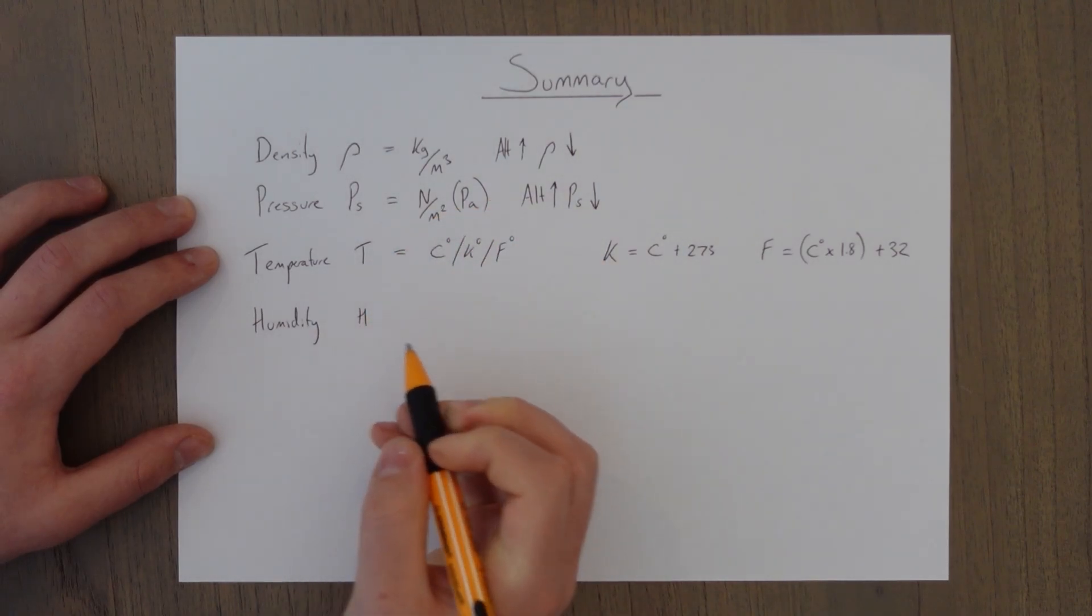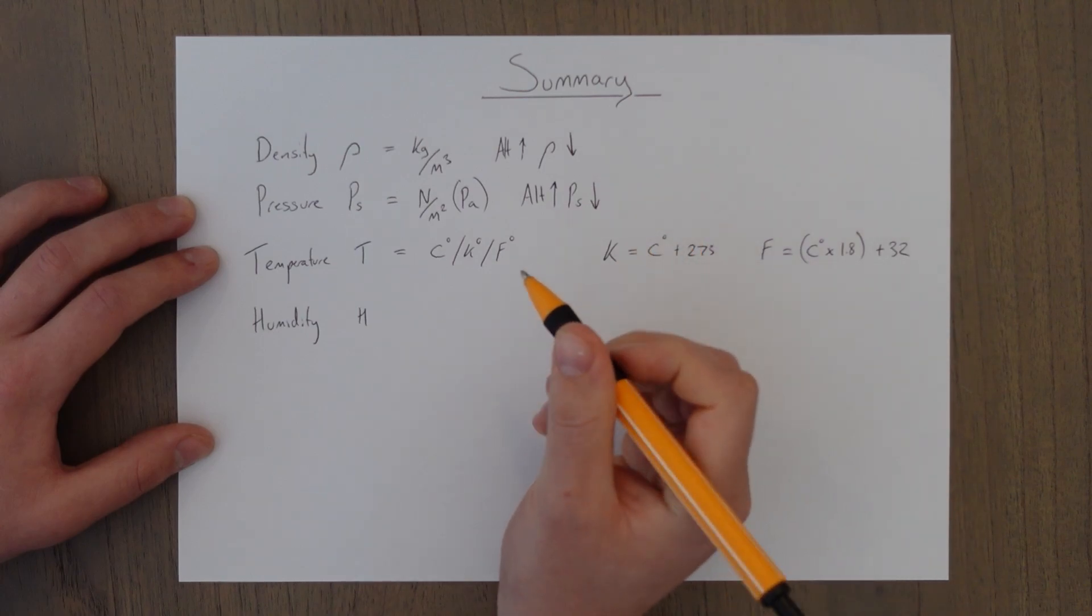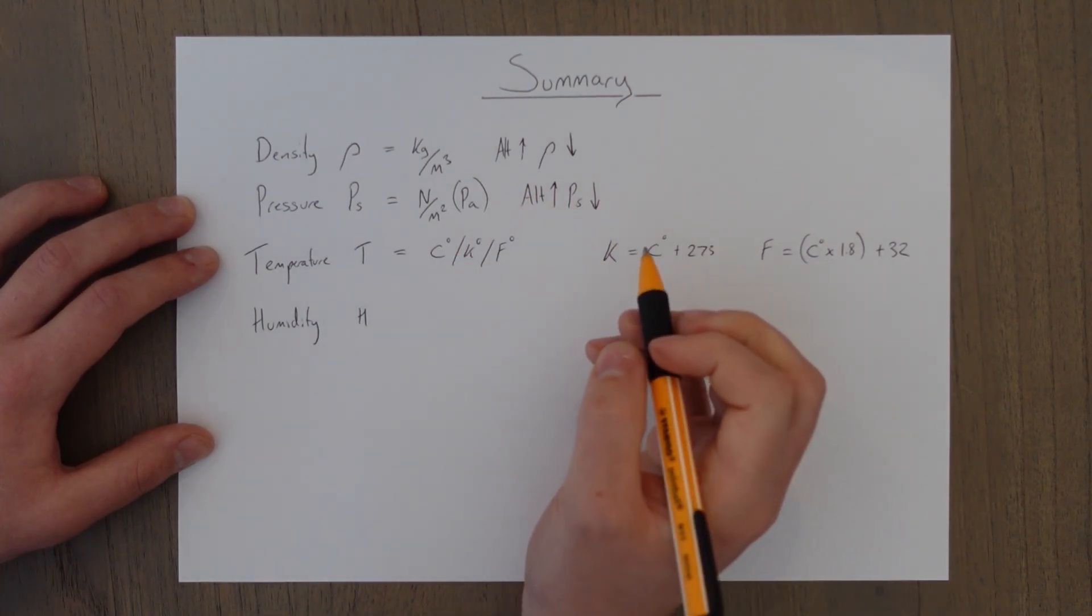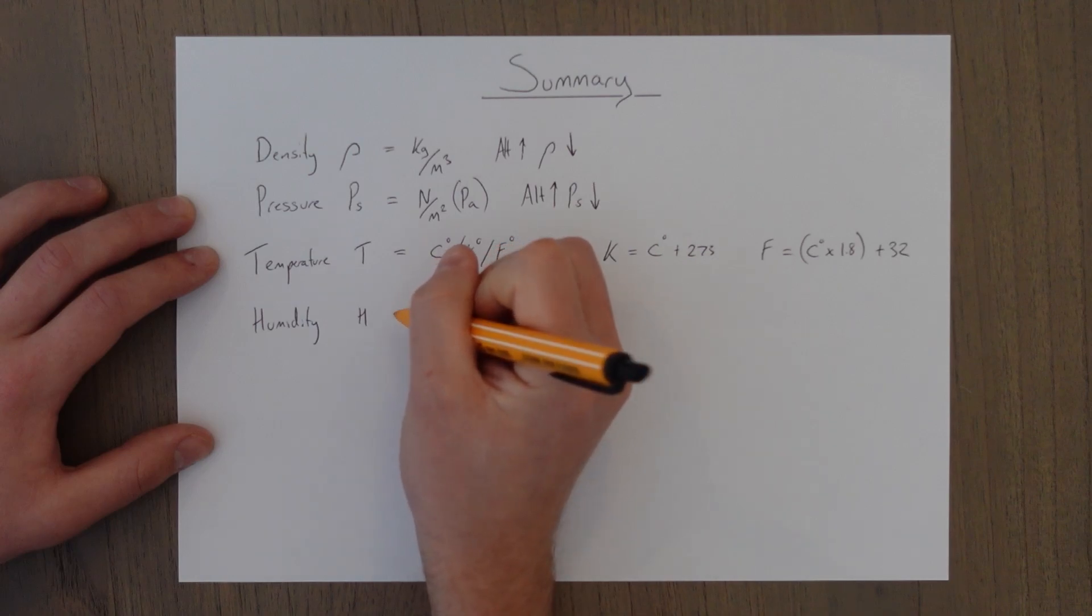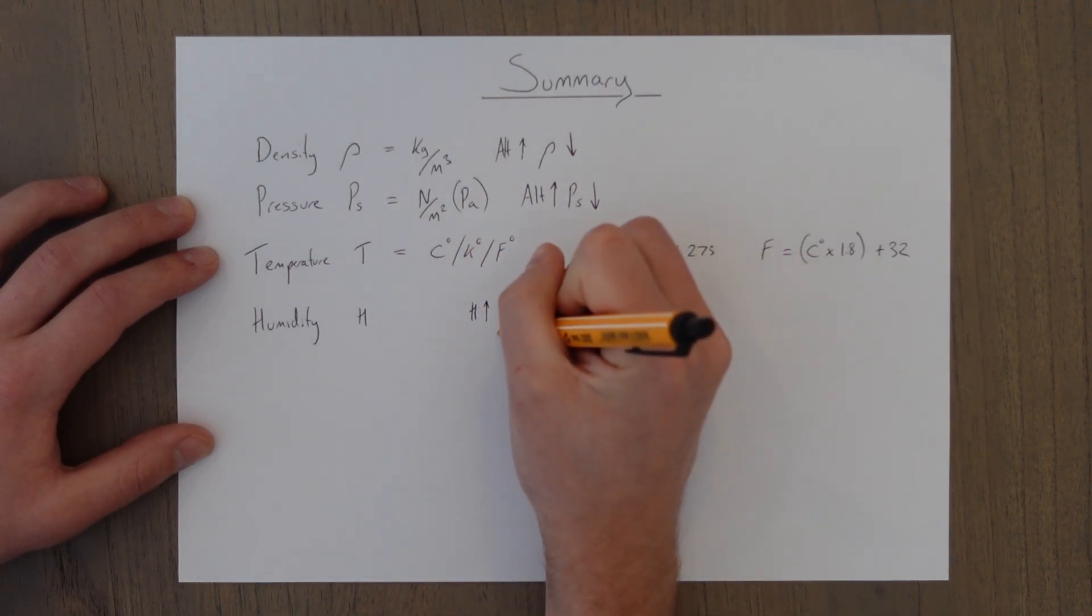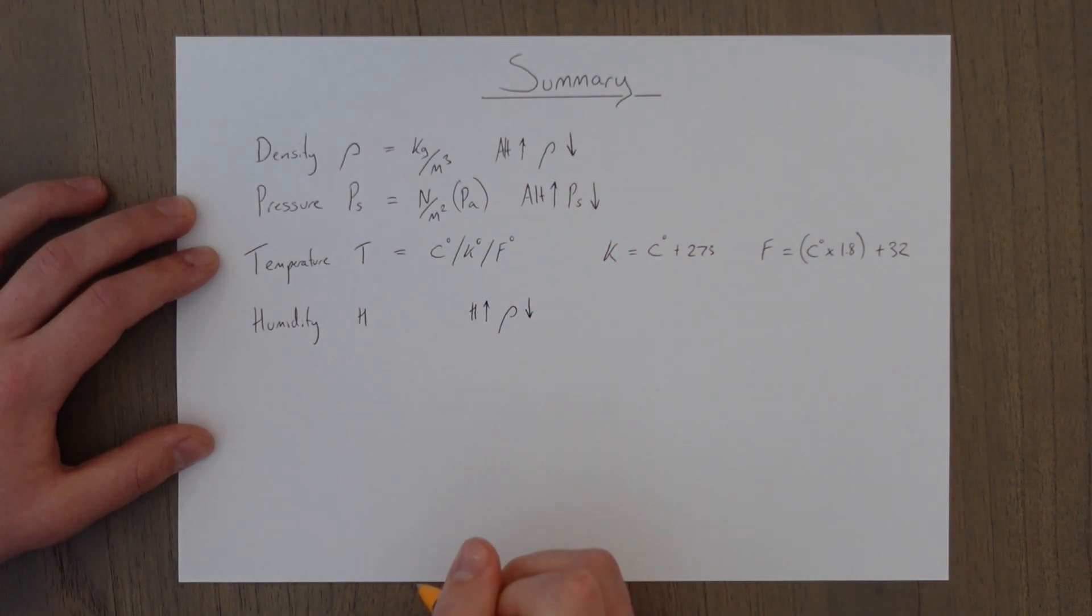Humidity, we talked about. And we can't say for sure what happens as we increase with altitude because humidity varies all over the world. But we can say that as humidity goes up, the density will go down because it displaces those heavier molecules with the lighter water.